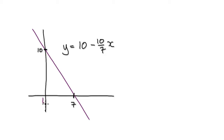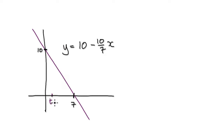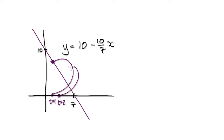So imagine t equals zero to be here. You want to somehow create the parametric equations in such a way that when t equals zero, it will jump to here. And then when t equals one, you want to create it so it will jump to here. When t equals two, you want to create the equations where it will jump from here to here.